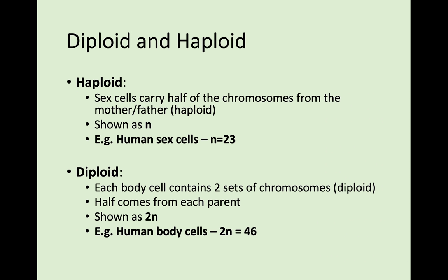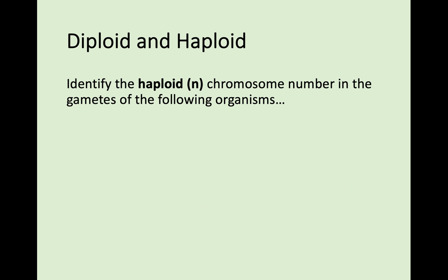If you need a refresher on haploid and diploid: sex cells carry half the chromosomes from the mother or father, so they are haploid. A human sex cell would have 23 chromosomes, as opposed to a normal body cell — a skin cell, muscle cell, and so on — which have 46. Body cells are double the number of sex cells.